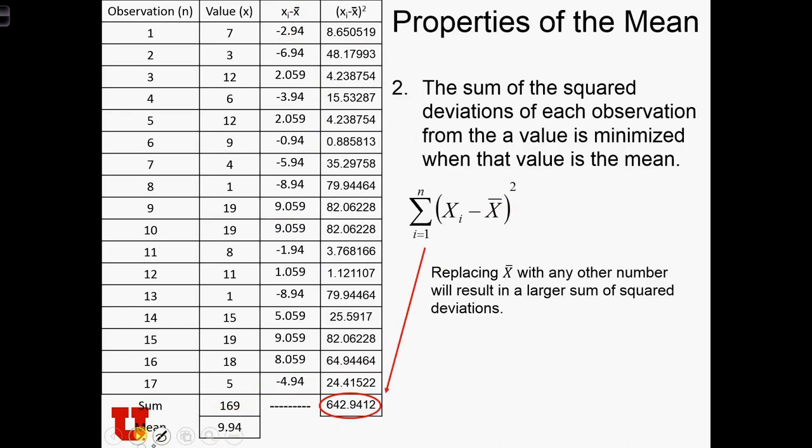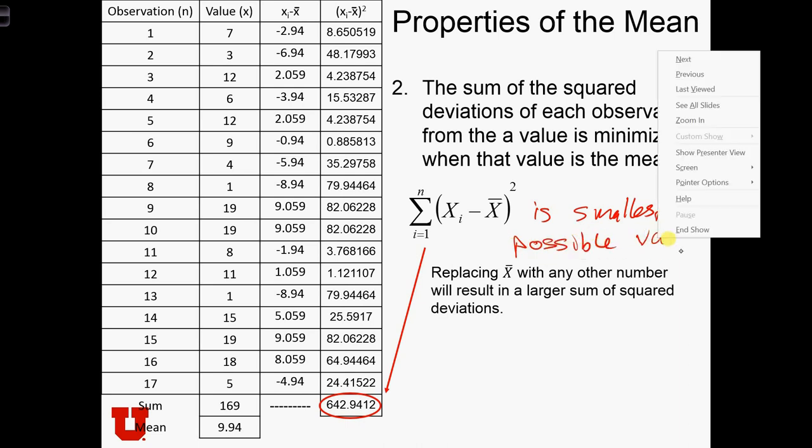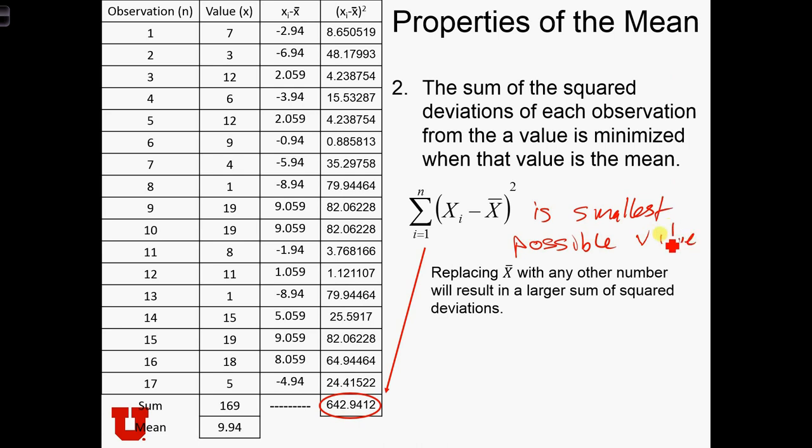The second property is that the sum of the squared deviations from the mean is minimized. So that means that this equation is the smallest possible value that we could get. If we had put another value in instead of x̄, when we added this up we would find some larger value than the one we actually get when we use x̄ in this equation.